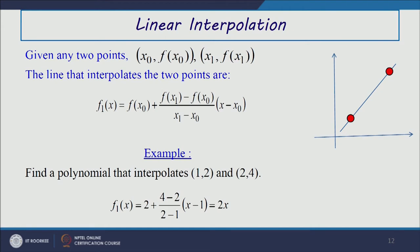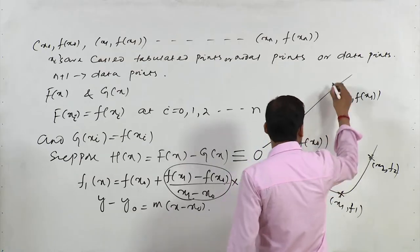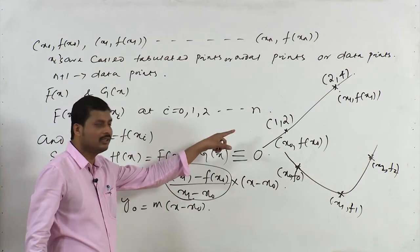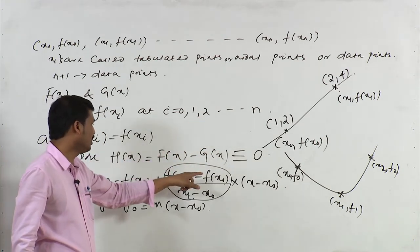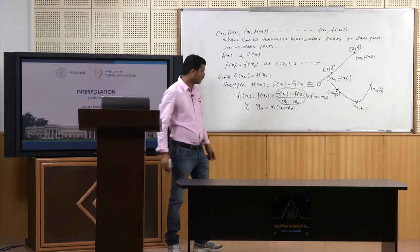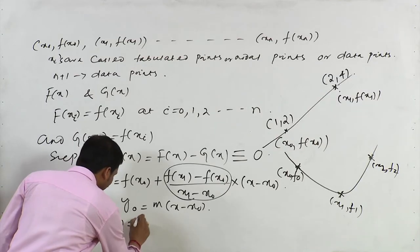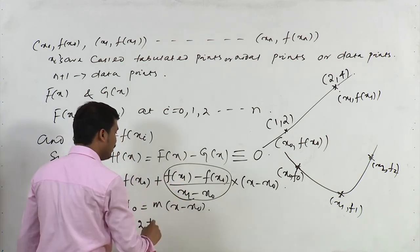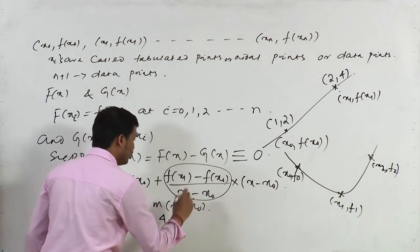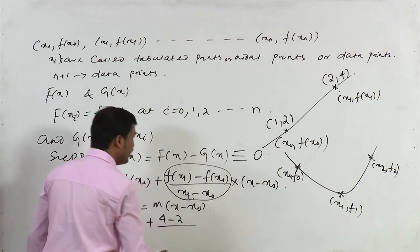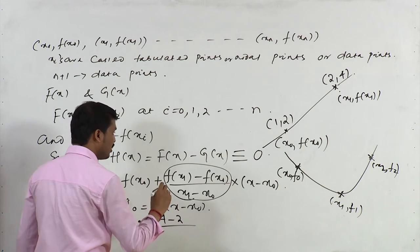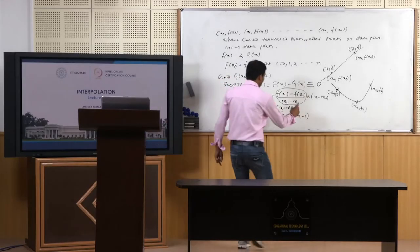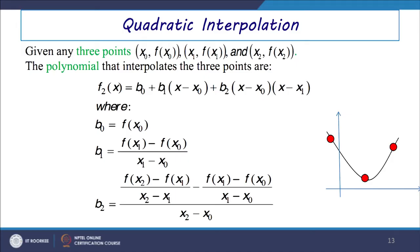For example, find a polynomial that interpolates the points (1, 2) and (2, 4). Here x0 = 1, y0 = f(x0) = 2, x1 = 2, f(x1) = 4. So f1(x) = 2 + (4 − 2)/(2 − 1) × (x − 1) = 2 + 2(x − 1) = 2x.